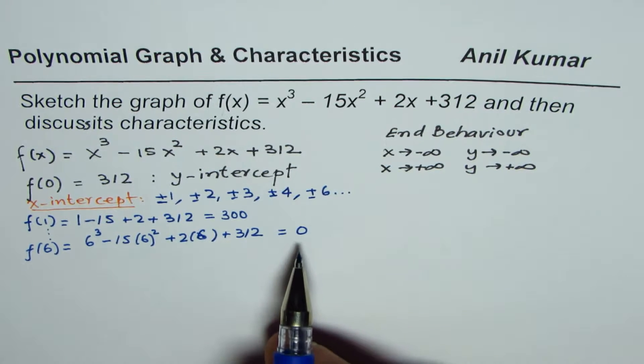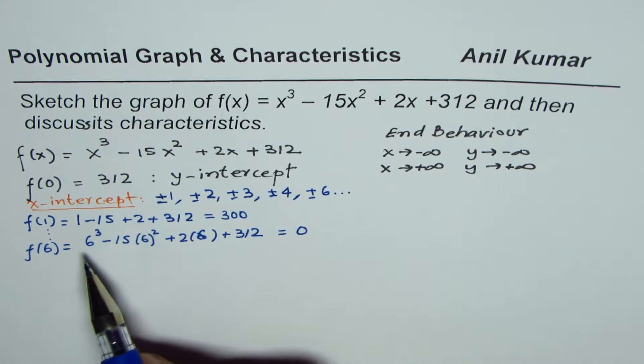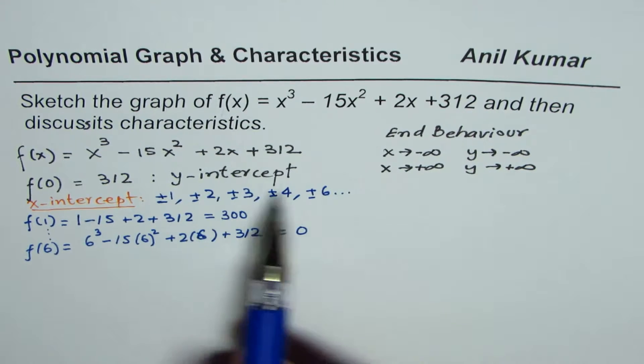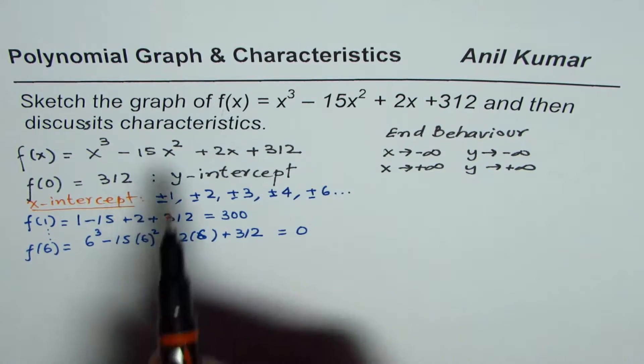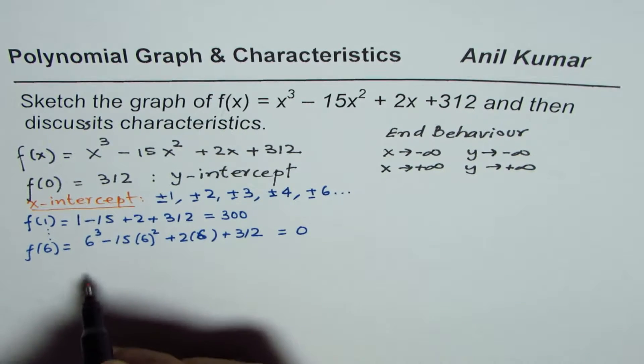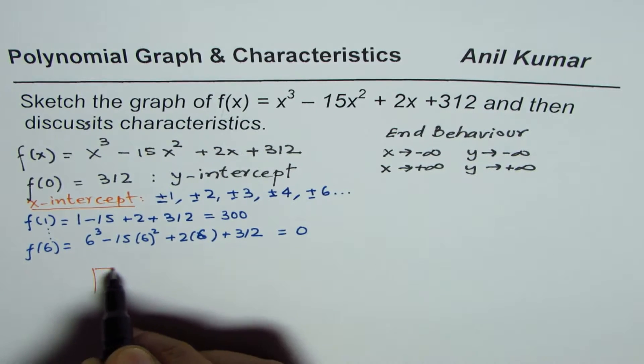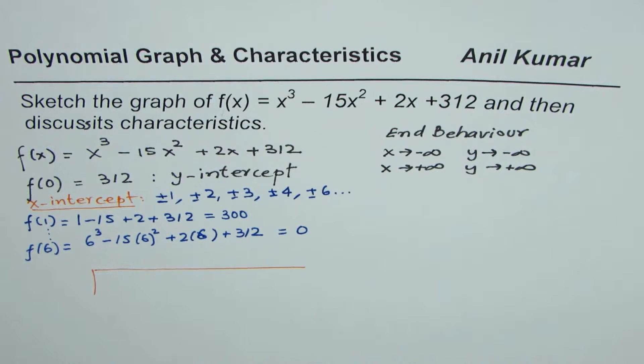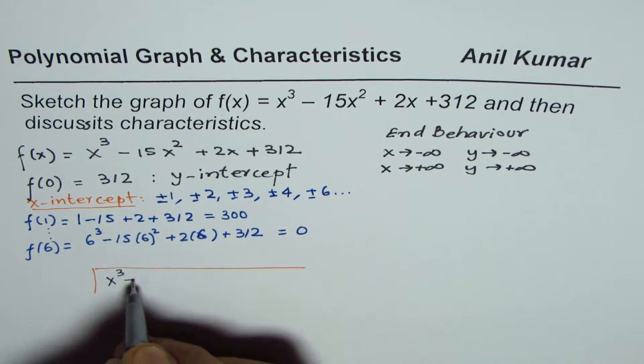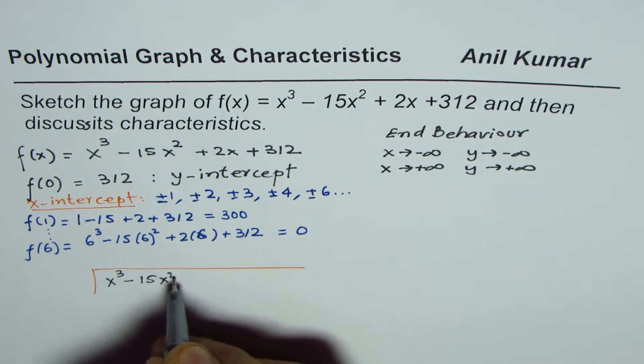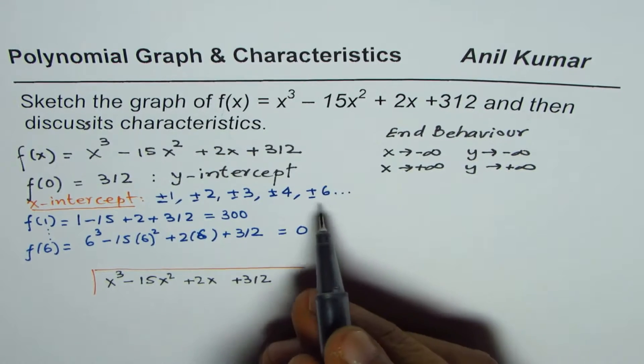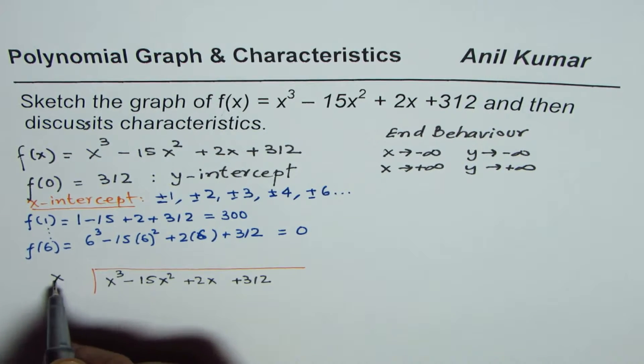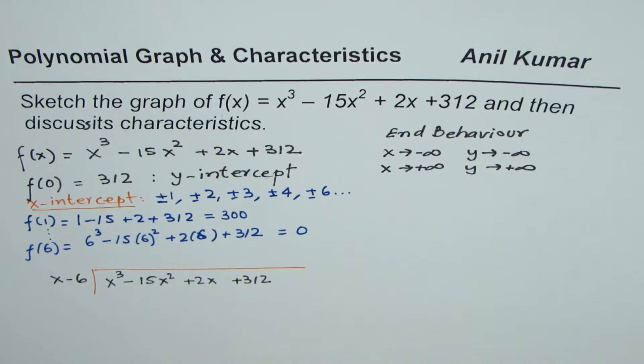Sometimes it may take long, like this case, you'll substitute so many values to get it right. But once you get this value, then what you need to do is divide by the factor. So what we'll do now is we'll divide x³ - 15x² + 2x + 312 by x - 6. We should get zero as our remainder.